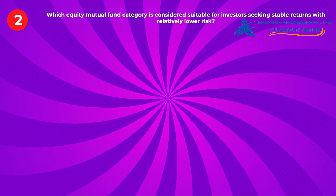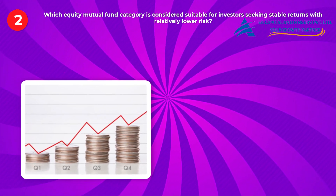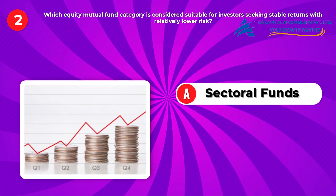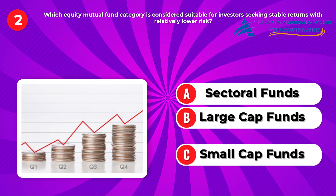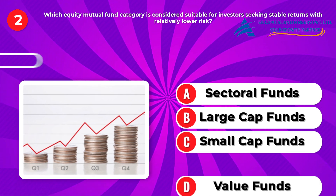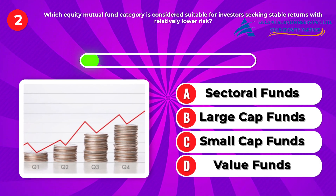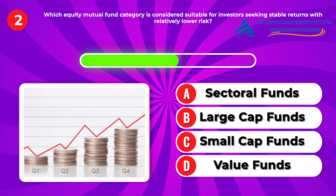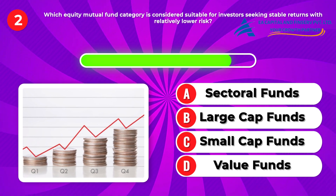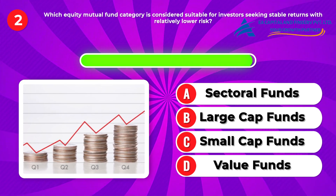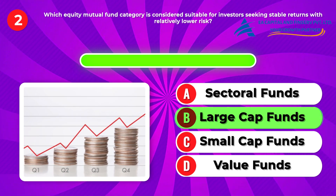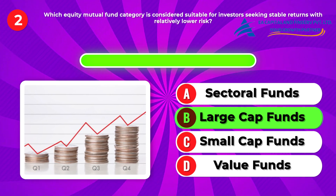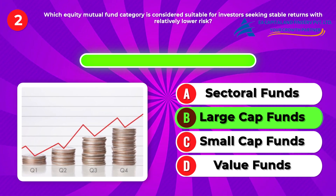Question two: Which equity mutual fund category is considered suitable for investors seeking stable returns with relatively lower risk? A, sectoral funds. B, large cap funds. C, small cap funds. D, value funds. Answer: B, large cap funds. These funds primarily invest in large, well-established companies known for their stability and consistent performance over time.